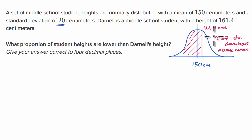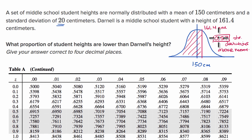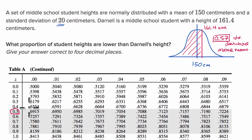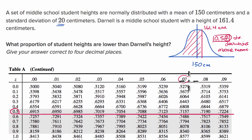Now why is that useful? We can take this z-score and look at a z-table to figure out what proportion is less than 0.57 standard deviations above the mean. The first column of the z-table gives us the z-score up to the tenths place, and the columns after that give us the hundredths place. For 0.57, we go to the row for 0.5 and the column for 0.07, and we get 0.7157.